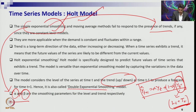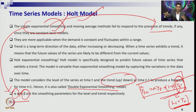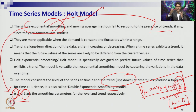Sometimes people call the Holt model a double exponential smoothing model, because in the basic exponential smoothing model you have only one exponential series. Here, you are doing one exponential smoothing for the level part and another for the trend part. Both series are calculated every iteration, summed together, and used to make the forecast. Therefore, it is alternatively called the double exponential smoothing model.